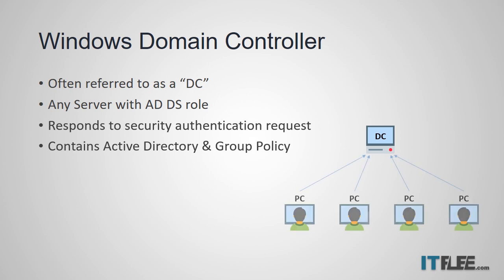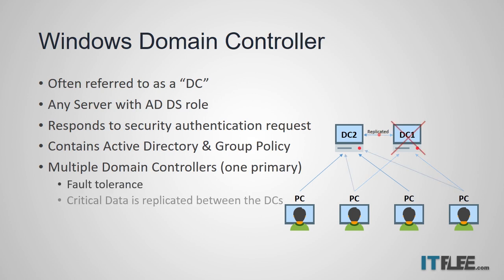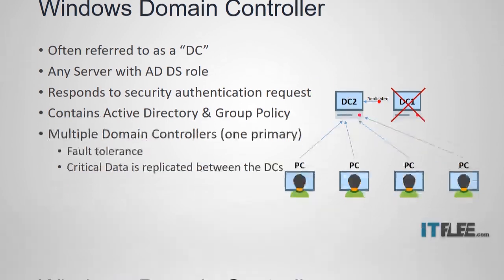You can have several domain controllers within a domain, but there is only one primary or main domain controller. The primary reason for having more than one DC is fault tolerance. Critical information, like user and account information, is replicated between the DCs, so if one goes down the client computers will switch to the other DC that is still functioning.